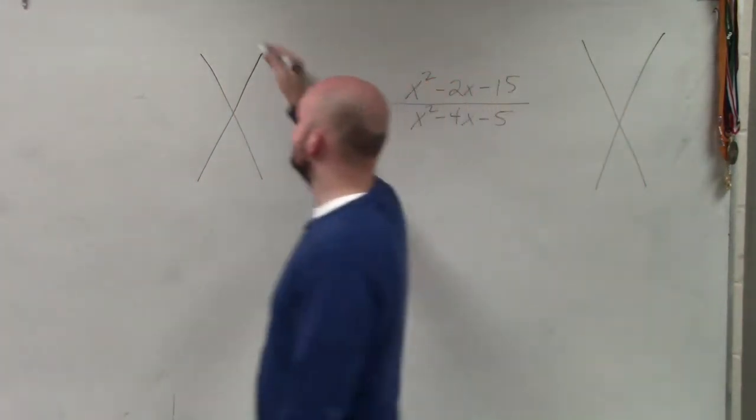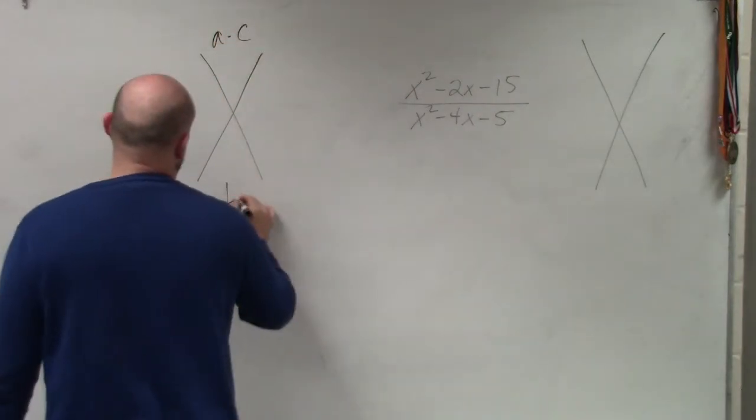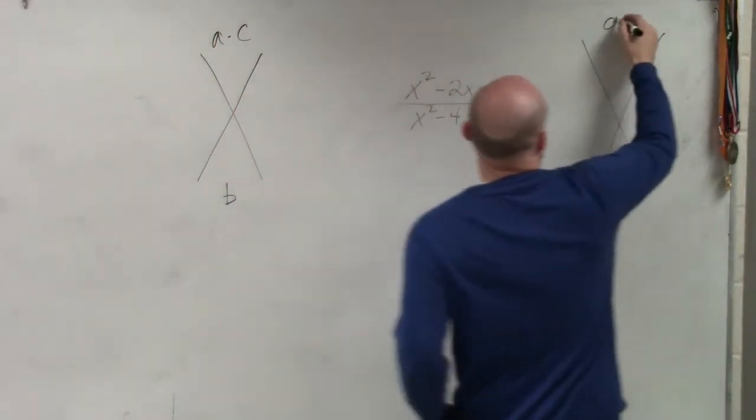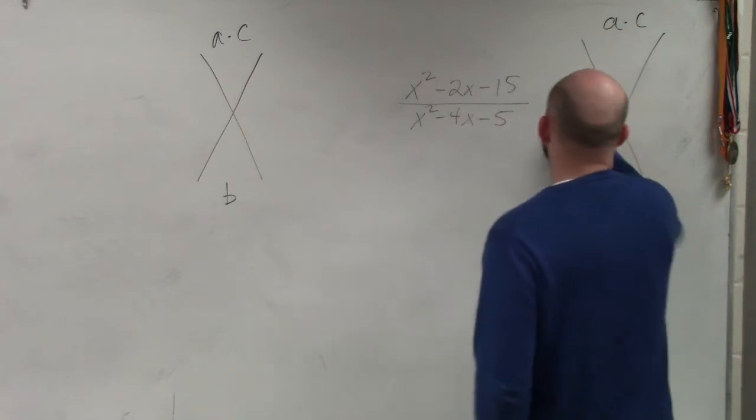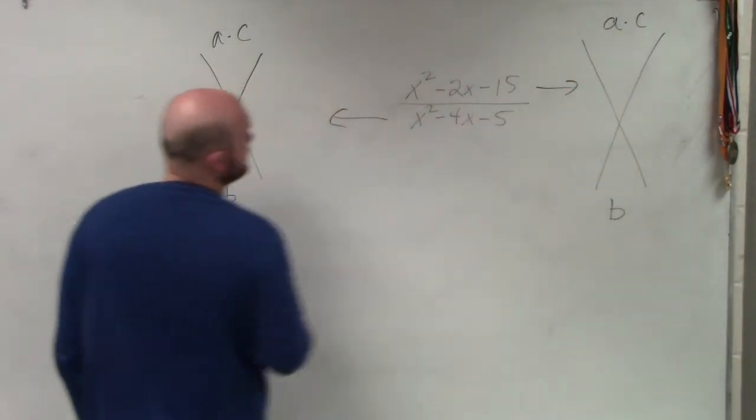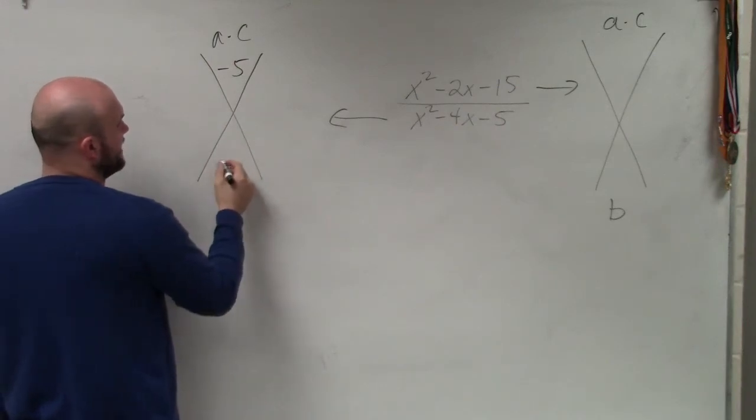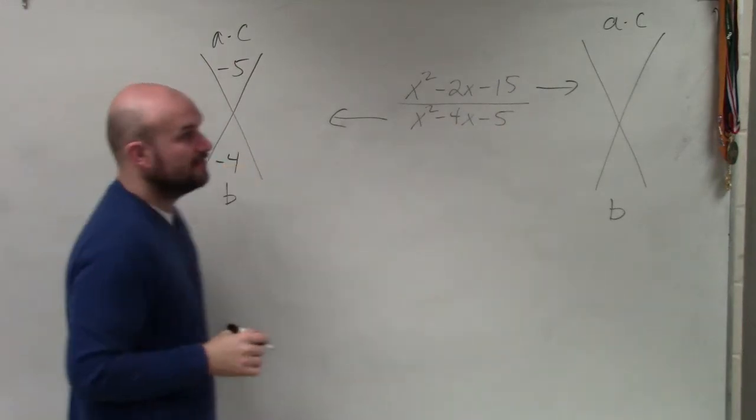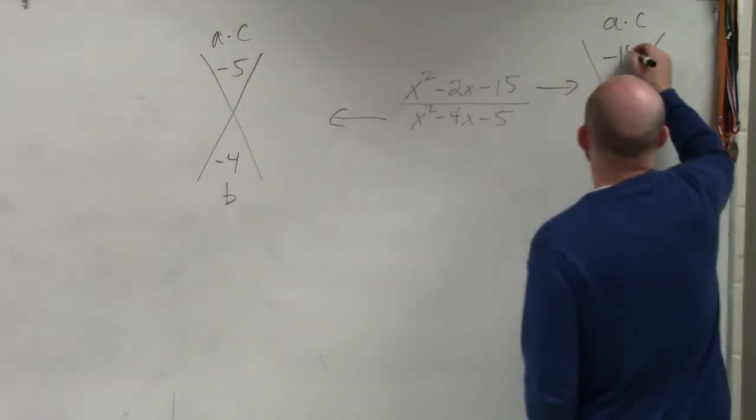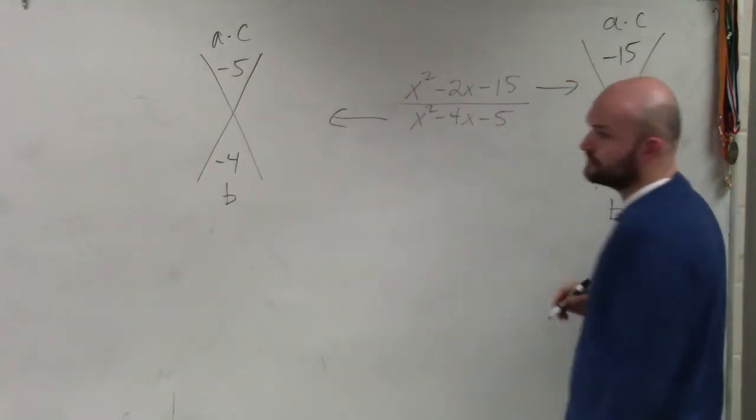And if you guys remember the factoring technique, we can take a times c and put it over b. So I'll do this one over here and this one over here. Therefore, I need to determine what two numbers multiply to give you negative 5, but then add to give you negative 4. And then what two numbers multiply to give you negative 15, and add to give you negative 2.